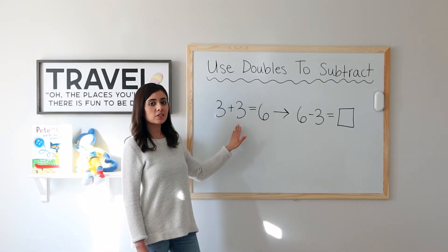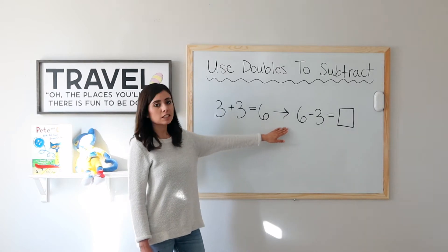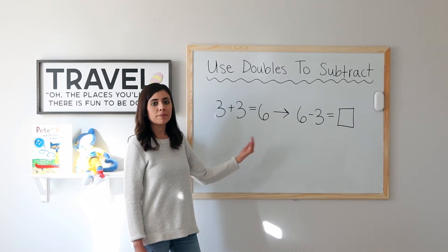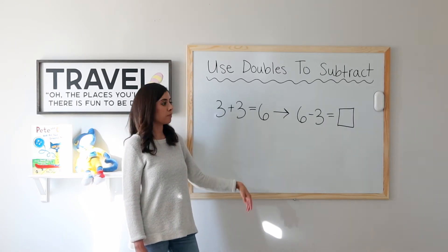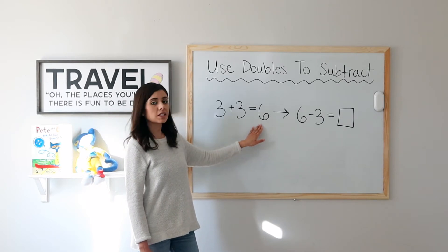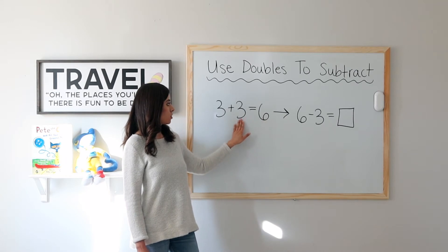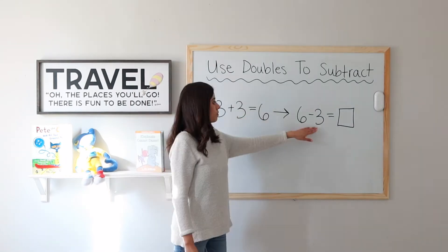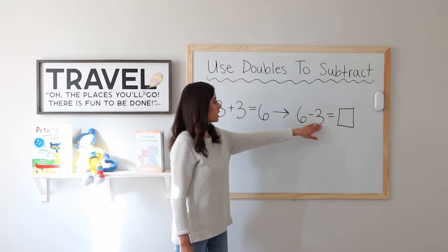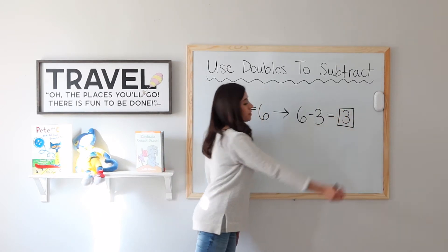3 plus 3 equals 6. I can use this doubles fact to find 6 minus 3 by reading it backwards as a subtraction problem. 3 plus 3 equals 6. Let's read it backwards. 6 minus 3 equals 3.